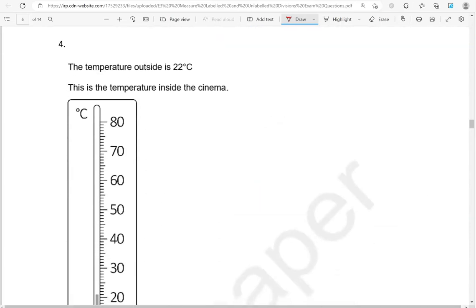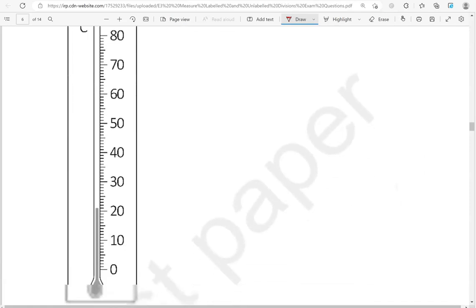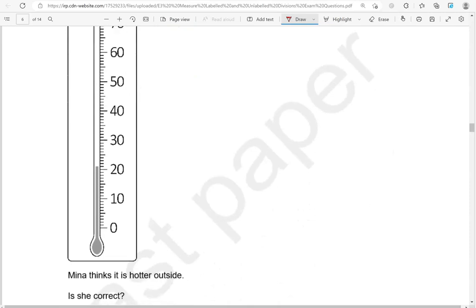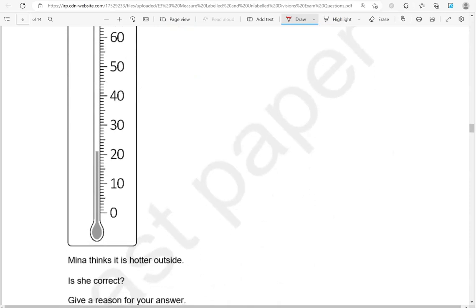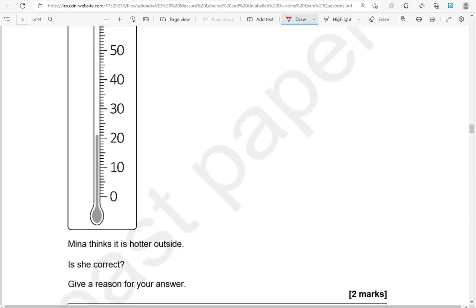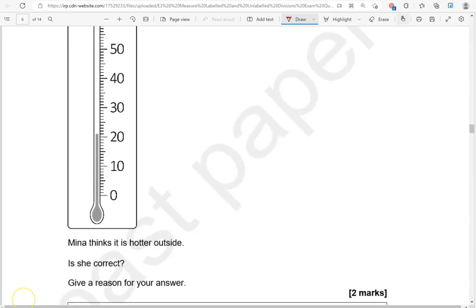The temperature outside is 22 degrees Celsius. What is the temperature inside the cinema? Mina thinks it is hotter outside. Is she correct? Give a reason for your answer. So this reading here is in between 20 and 30. Let's try.